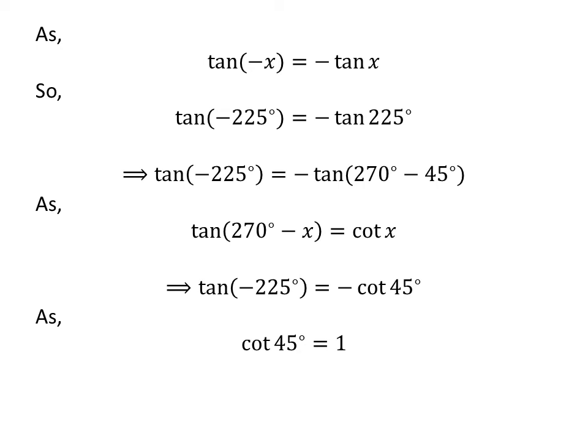As we know, the value of cotangent of 45 degrees is equal to 1. So, we get the value of tangent of minus 225 degrees is equal to minus 1.